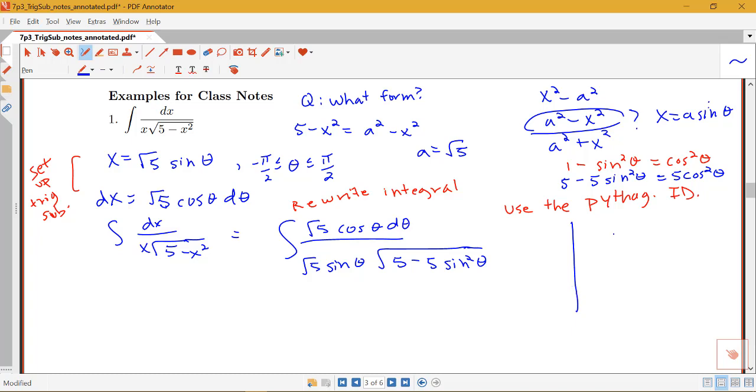Let me just write the other thing you could do is you could take what's under that square root. Think about factoring 5 out. So you have 1 minus sine squared theta inside and then see how that's 5 cosine squared theta. So you can think about it in either one of those two ways. But now we're going to have, before I rewrite this, notice that I get a little bit of cancellation here. This root 5 and this root 5 cancel. So we've got cosine theta d theta over sine theta.